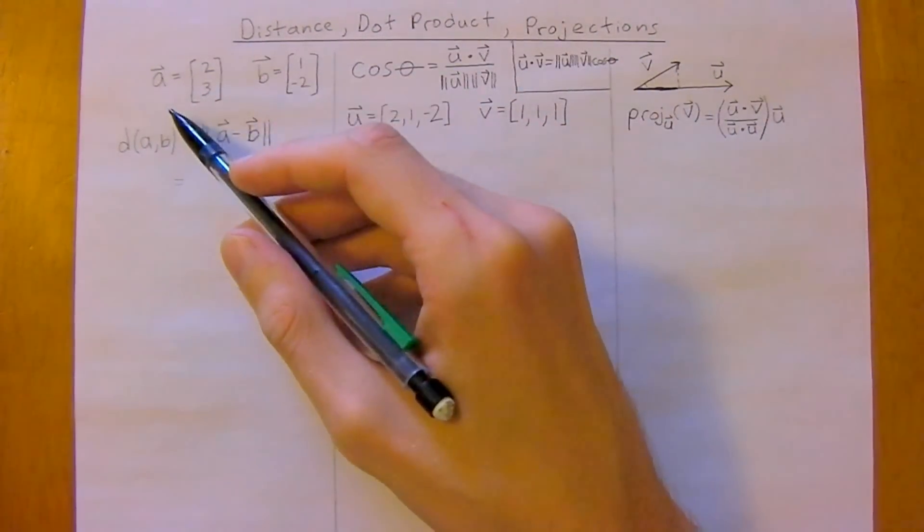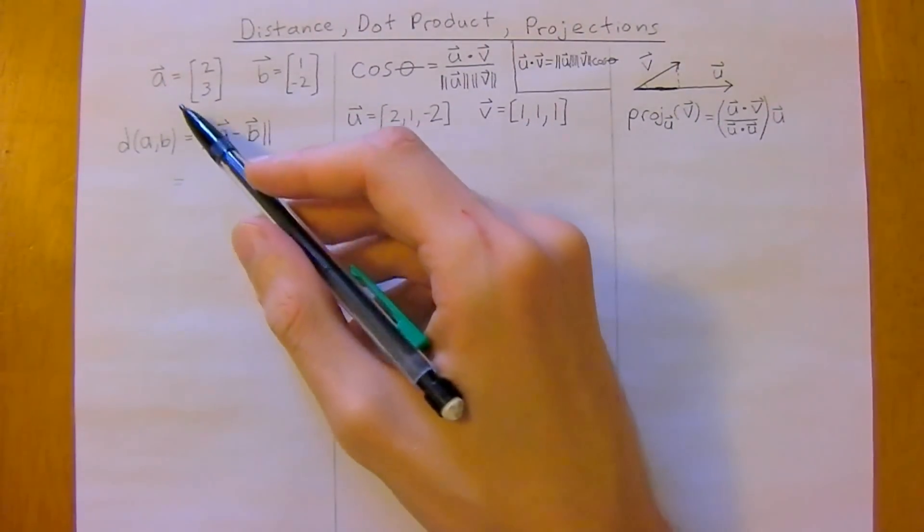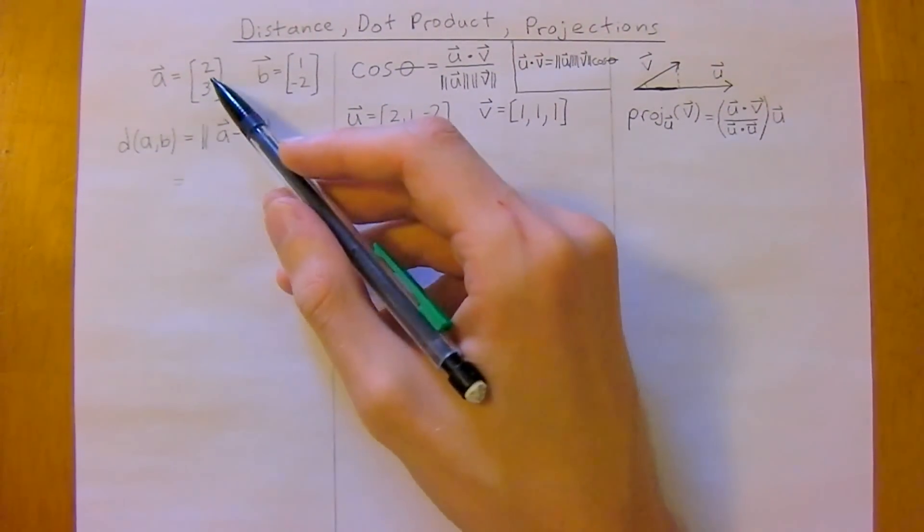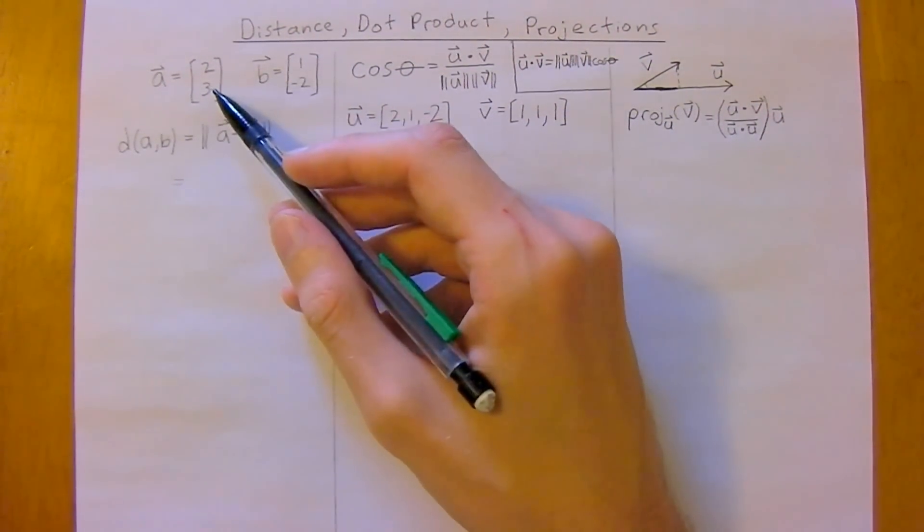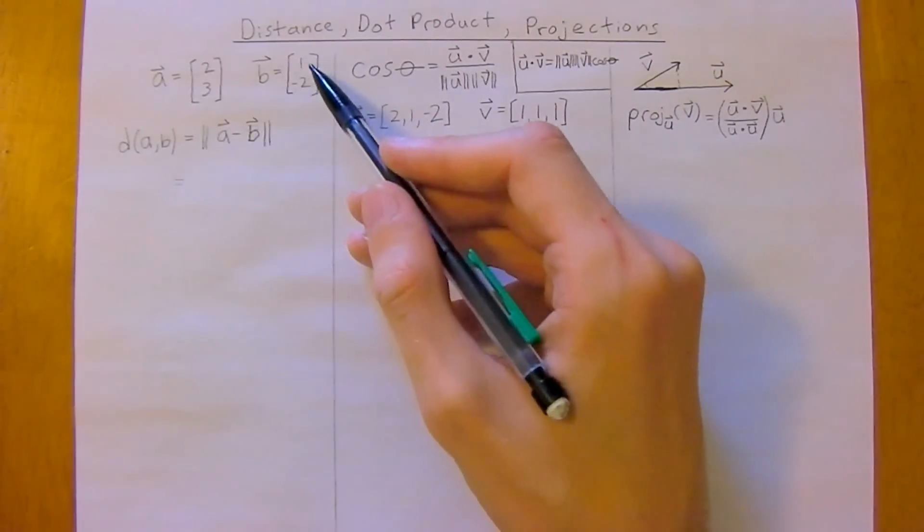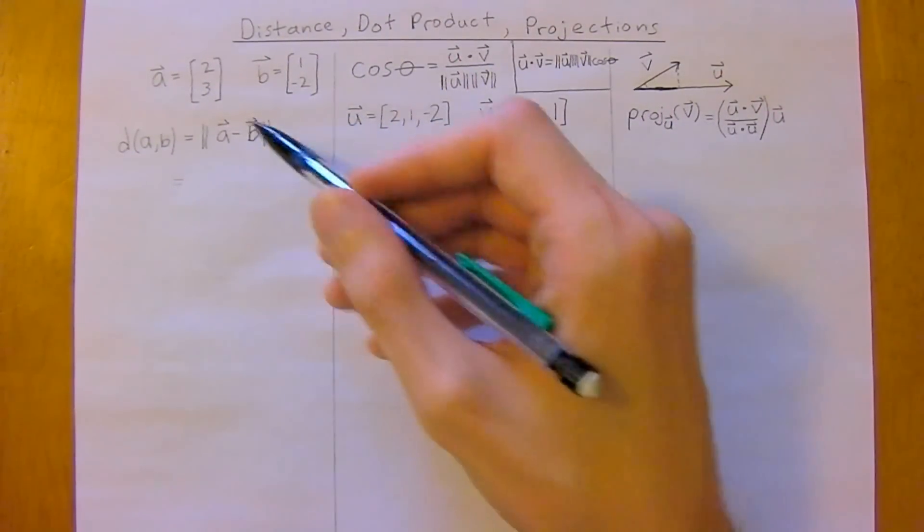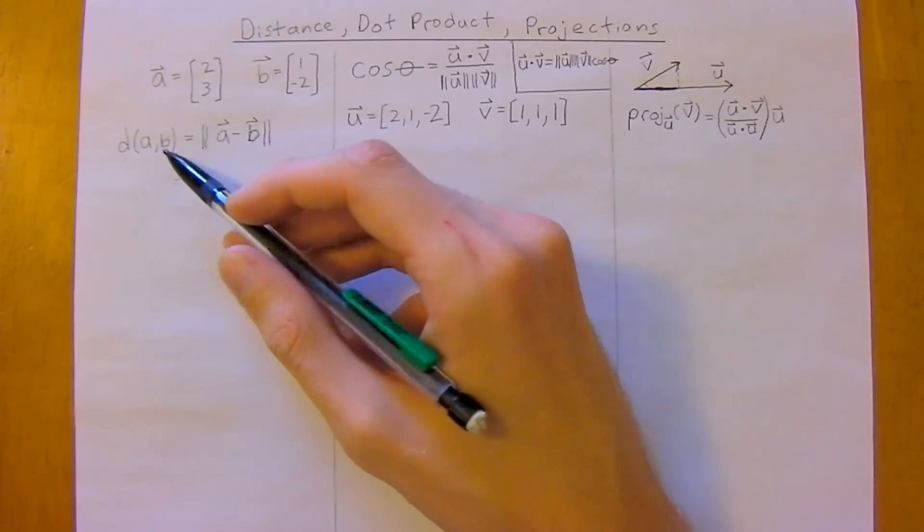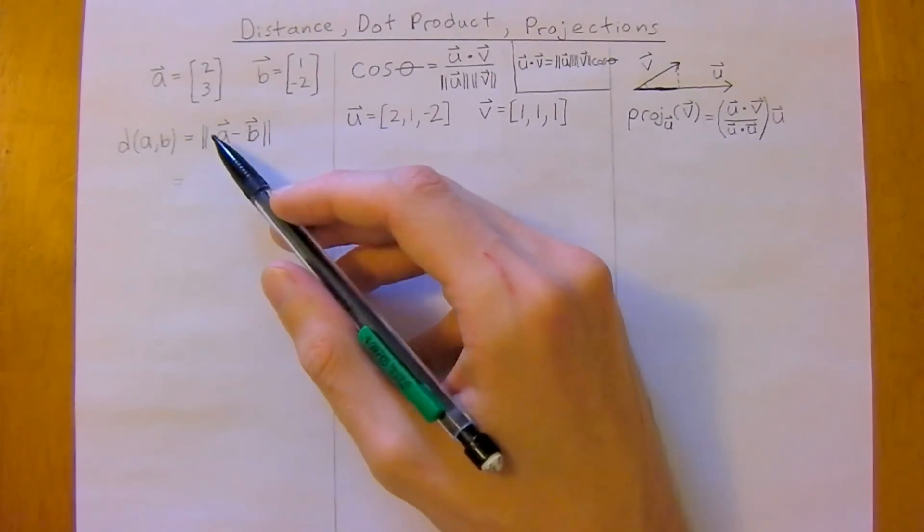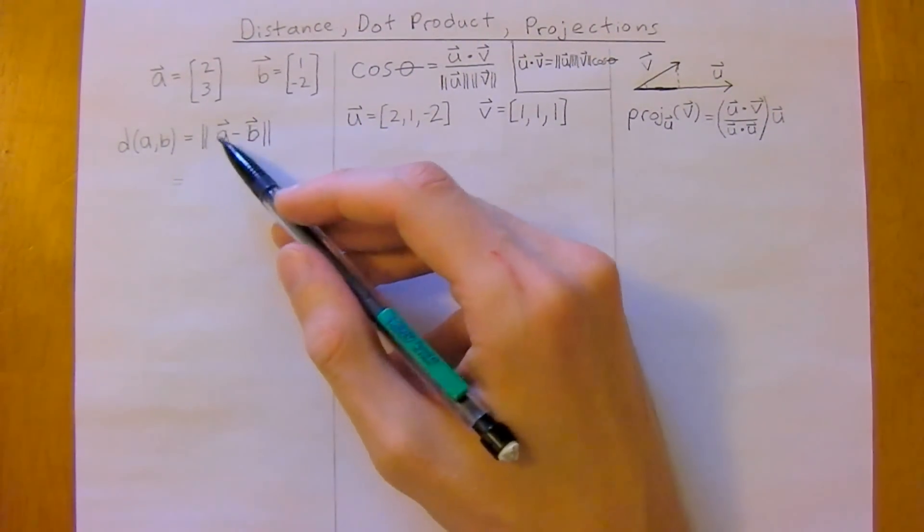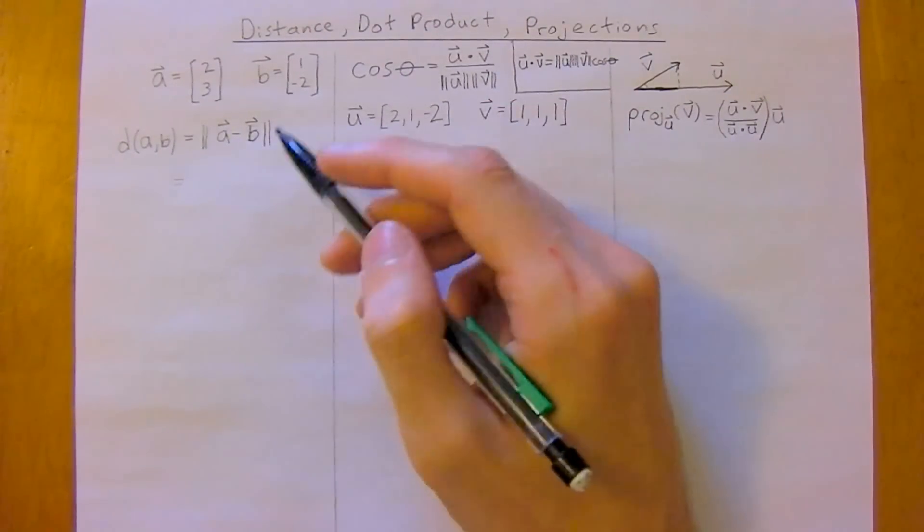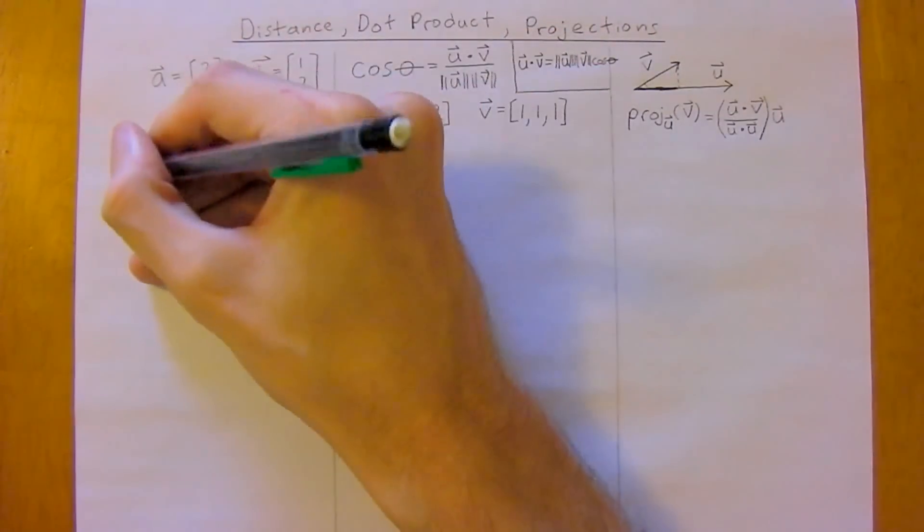So how do you find the distance between two vectors? So we have vector A, which is 2 in the x-axis, 3 in the y-axis, and B, which is 1 and negative 2. Well, the distance between A and B is just going to be equal to the magnitude of vector A minus vector B. So what does this mean?